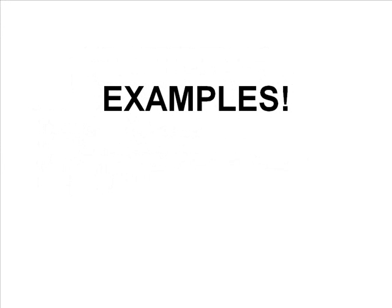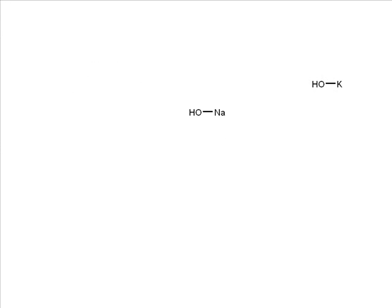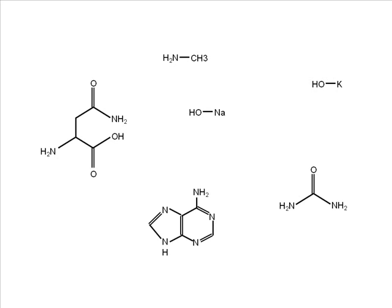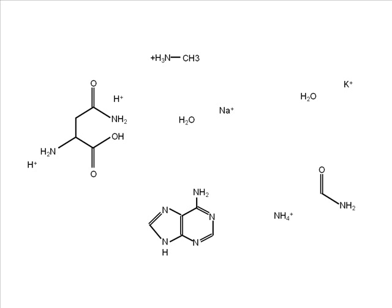Let's look at some examples: potassium hydroxide, sodium hydroxide, methylamine, urea, asparagine, and adenine. These are all bases because each one has the ability to influence hydrogen ion concentration by lowering it. Many of them will, as we see here, dissociate to form hydroxides which remove a hydrogen from solution. Others will bond directly with it and remove it from solution by directly taking in that free proton. Either way, each of these bases removed at least one hydrogen ion from solution and lowered the hydrogen ion concentration.